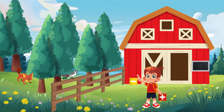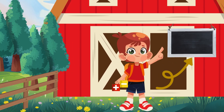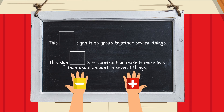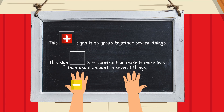Brilliant, thank you, you are the best. Can you help me to put these signs in the correct position on this board? There are some words written here. Let us read together: this blank sign is to group together several things. This sign blank is to subtract or make it more or less than the usual amount of things. That's brilliant, we have completed our task for today. Thank you to my friends, you are amazing.